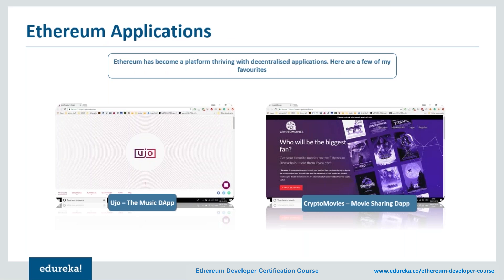Now that we've covered the different aspects of Ethereum, let's look at some interesting applications developed on the platform. Applications running on Ethereum's network are called decentralized applications (dApps). Their core logic is run with smart contracts written in Solidity, an Ethereum-specific scripting language. These applications have no single point of service, making a denial-of-service attack practically impossible. This means decentralized applications offer zero downtime and have no singular ruling authority.